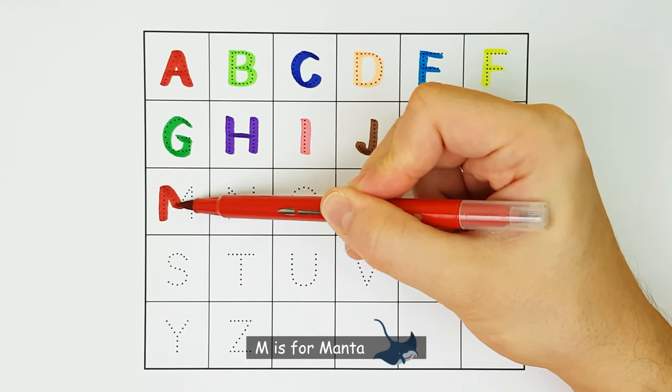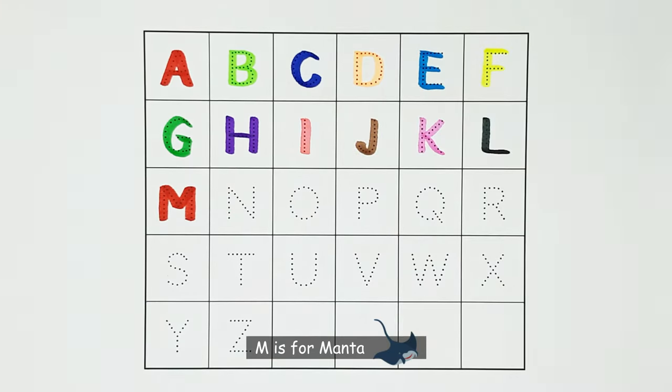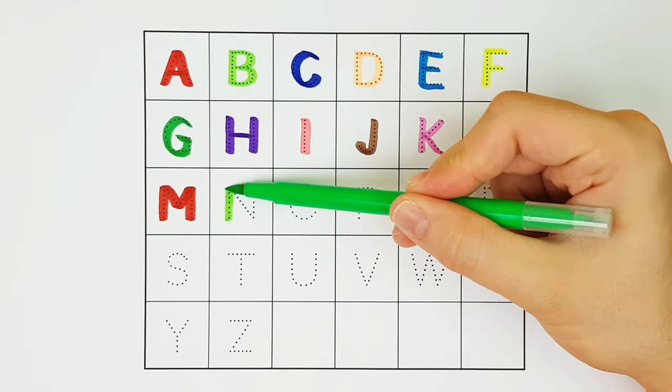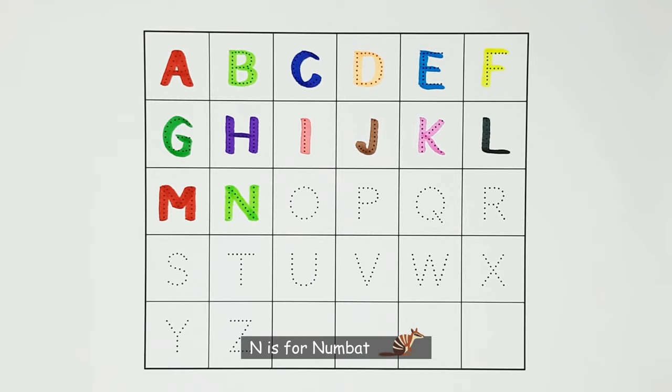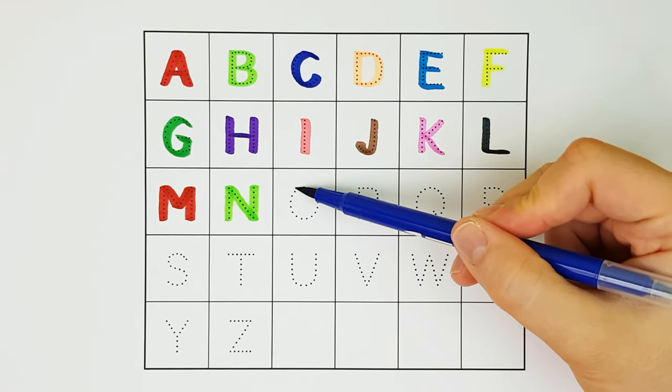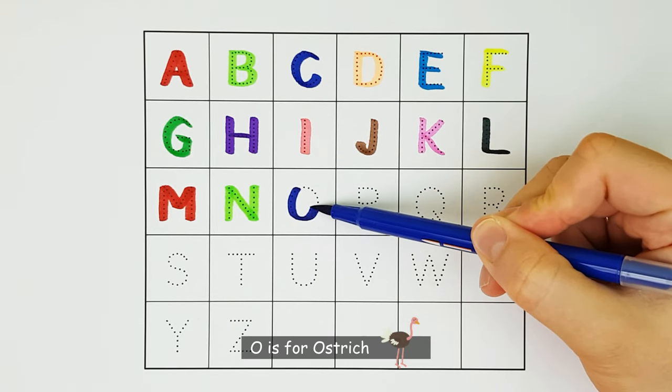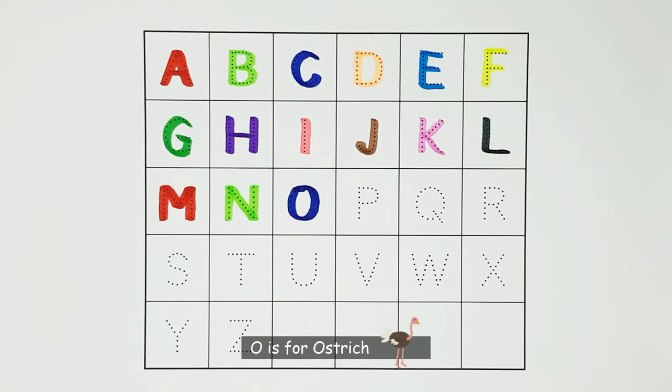M. M is for Manta. M. N. N is for Numbat. N. O. O is for Ostrich. O.